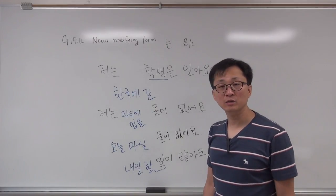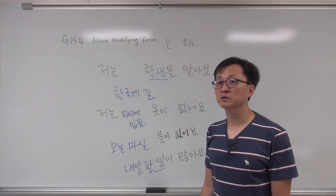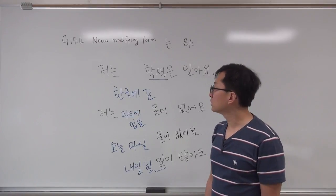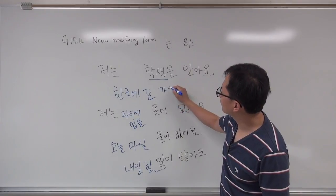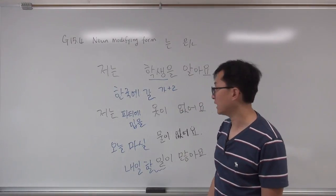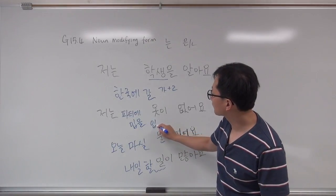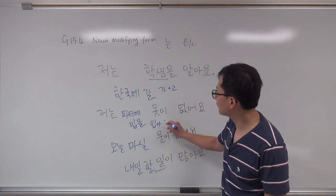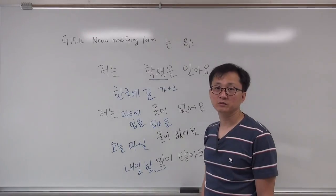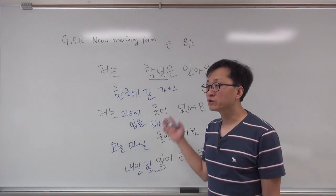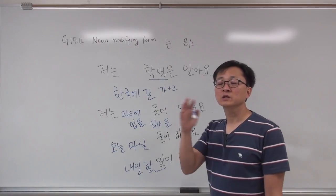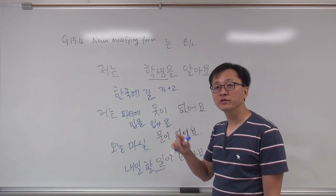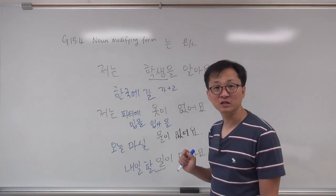내일 할 일이 많아요? 아니요, 내일 할 일이 없어요. 그러면 같이 영화 봐요. What is the form? 한국에 가다 — 가다. When there is no final consonant, you just add ㄹ: 갈. 입다 — when there is a final consonant, you add 을: 입을. So: 입을 옷이 없어요. Verb past tense → 은 or ㄴ. Verb present tense, ongoing action → 는. Verb future tense → 을 or ㄹ.